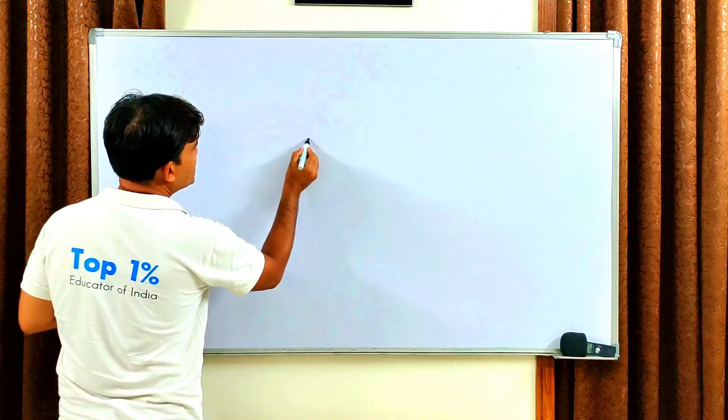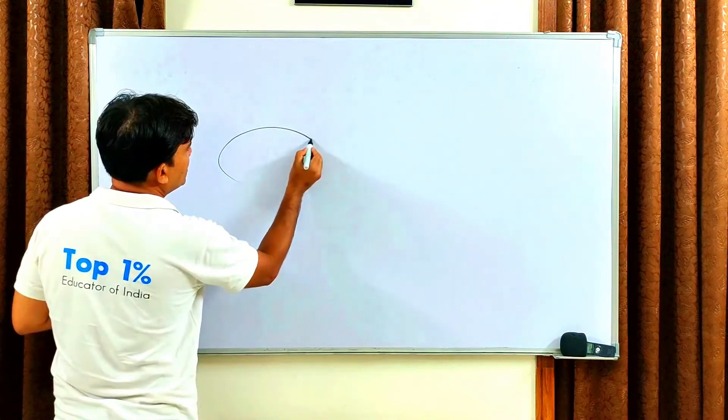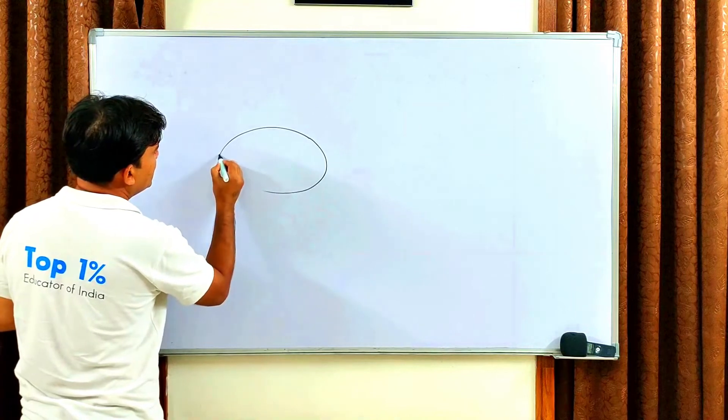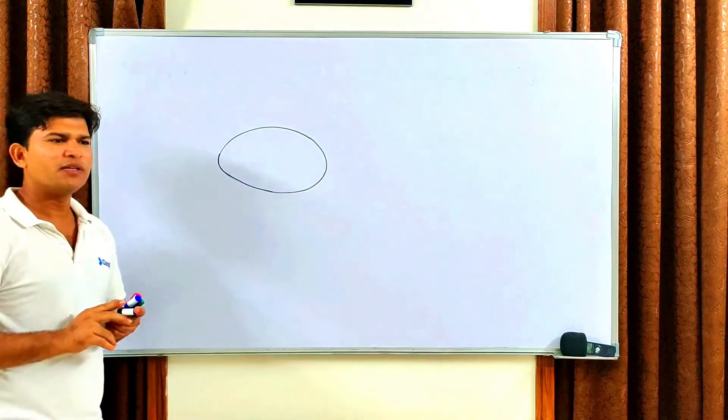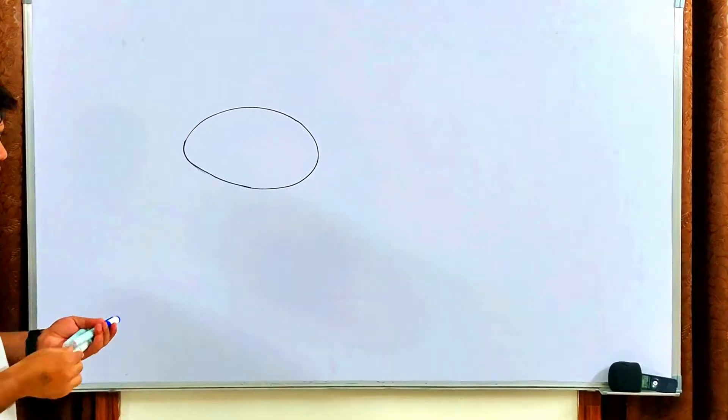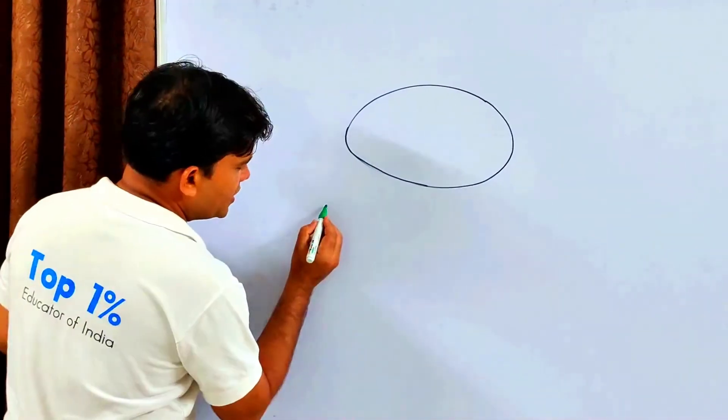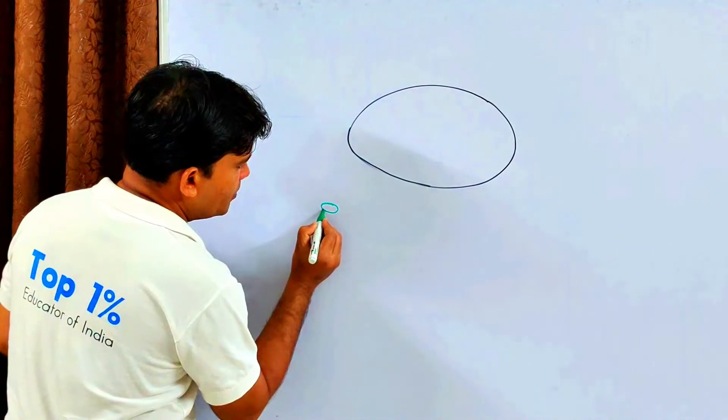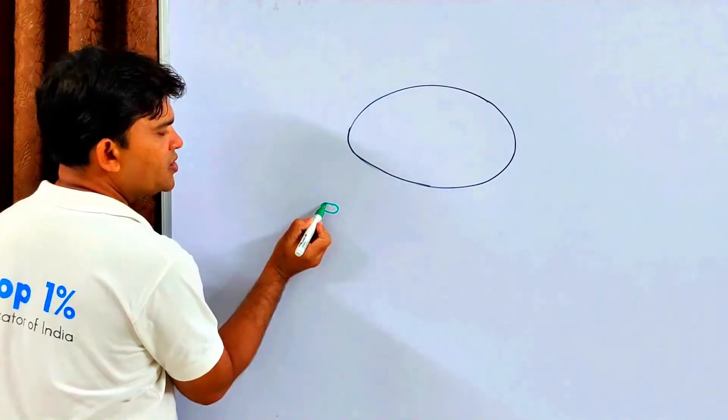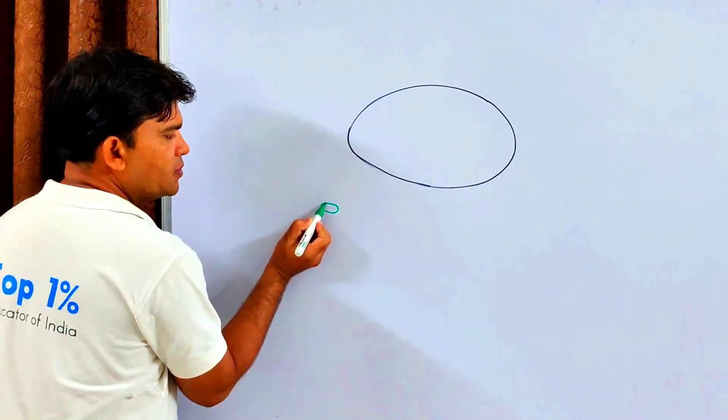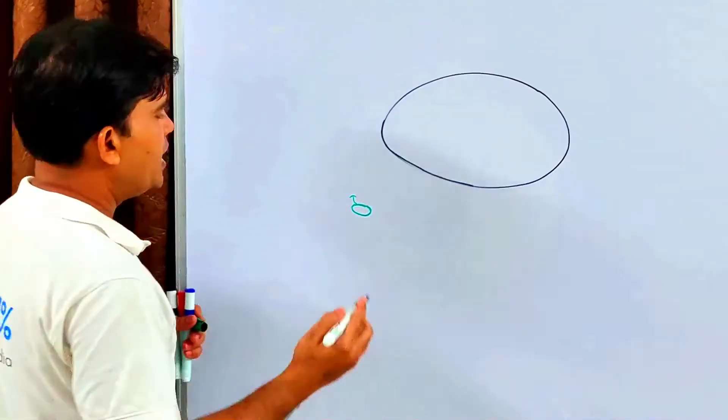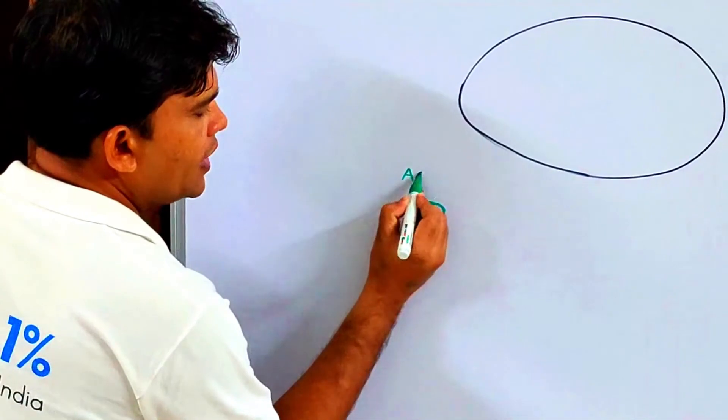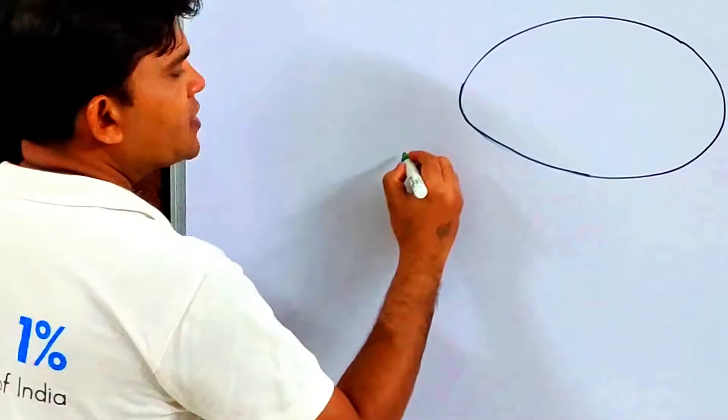So yes, suppose this is a platelet, right? So the first group of anti-platelets that we discussed - when injury occurs, the platelet cell membrane is disrupted and it is made of lipid. Lipid is made of fatty acids, and one of the acids is arachidonic acid.